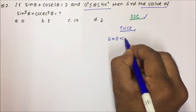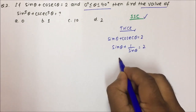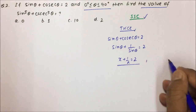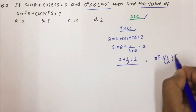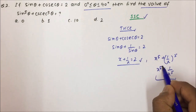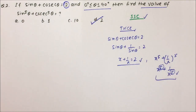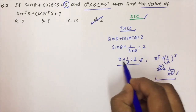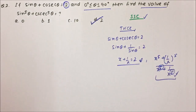Here, sin θ + cos θ = √2. You can write this as sin θ + 1/sin θ = √2... actually as x + 1/x = 2. Whenever you get x + 1/x = 2 and you have to calculate x⁵ + 1/x⁵, and if the power is the same on both sides, then the answer will be nothing but 2. This is a standard form asked in SSC multiple times. Just check if it is in the form x + 1/x = 2 — if so, x⁵ + 1/x⁵ = 2, so your answer is option D.